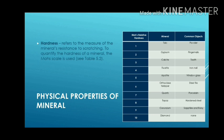Hardness refers to the measure of a mineral's resistance to scratching. To quantify the hardness of a mineral, the Mohs scale is used. The Mohs relative hardness ranges from 1 to 10. The lowest hardness is the mineral talc and the highest is diamond, which means diamond is the hardest on the Mohs relative scale.